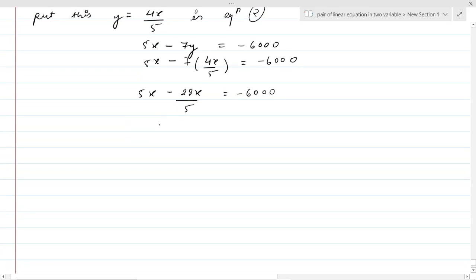Taking LCM, after taking LCM we get 25X minus 28X. And multiplying this 5 with 6000, we get minus 30,000. So we get minus 3X equal to minus 30,000. So X equal to 10,000.